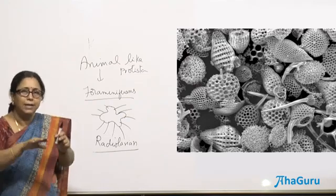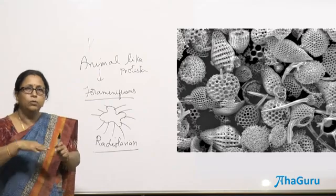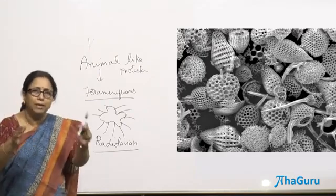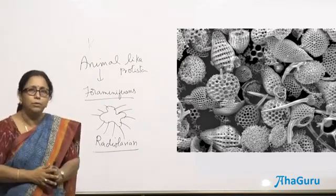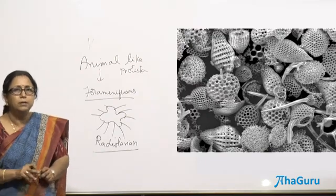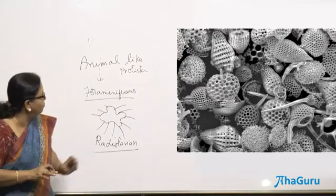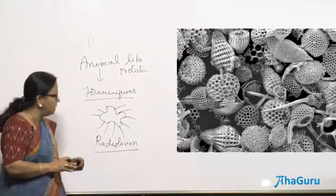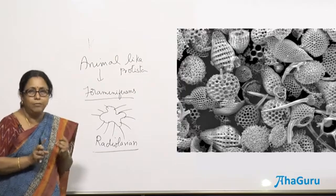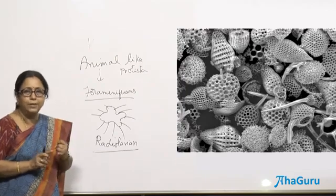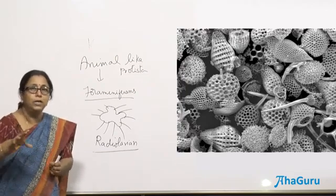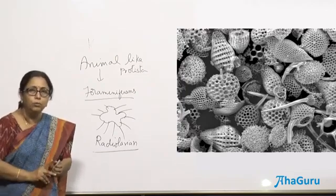Both foraminifera and radiolarians deposit their dead shells on the sea floor. They are used as indicators when people look for oil deposits in the sea — deposits of foraminifera and radiolarians tell them where oil can be found. They get piled up over years without getting destroyed. Foraminifera form white cliffs and are indicators of oil deposits in the ocean, and they are major planktonic organisms.